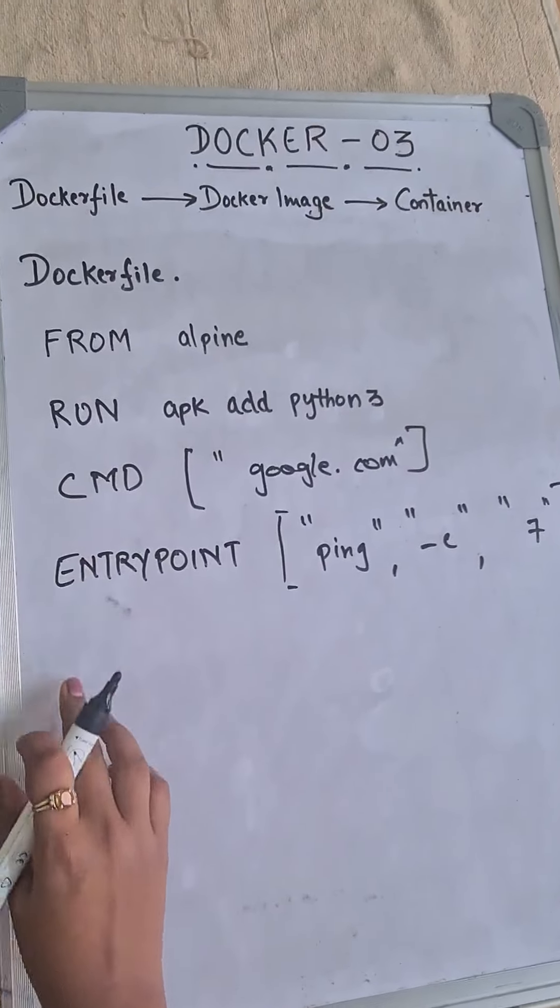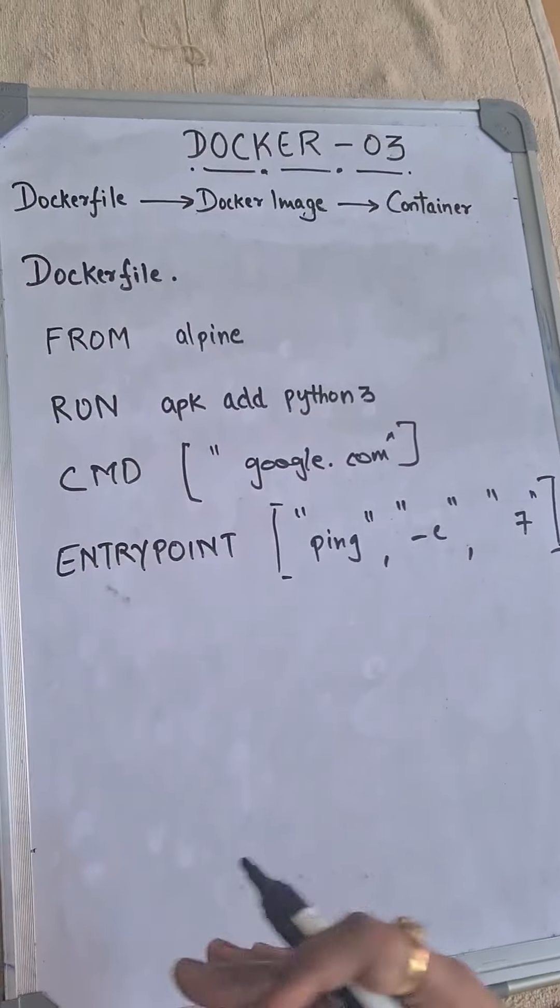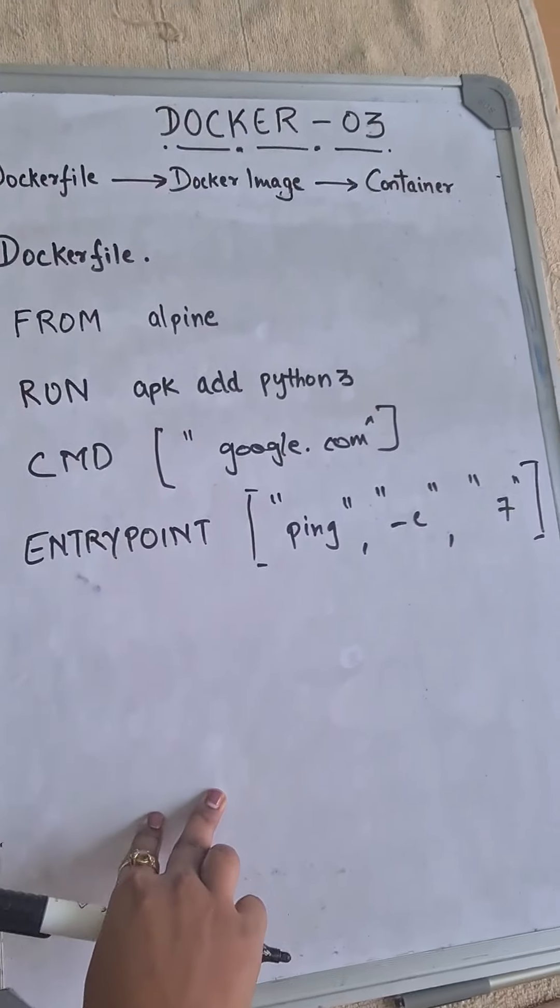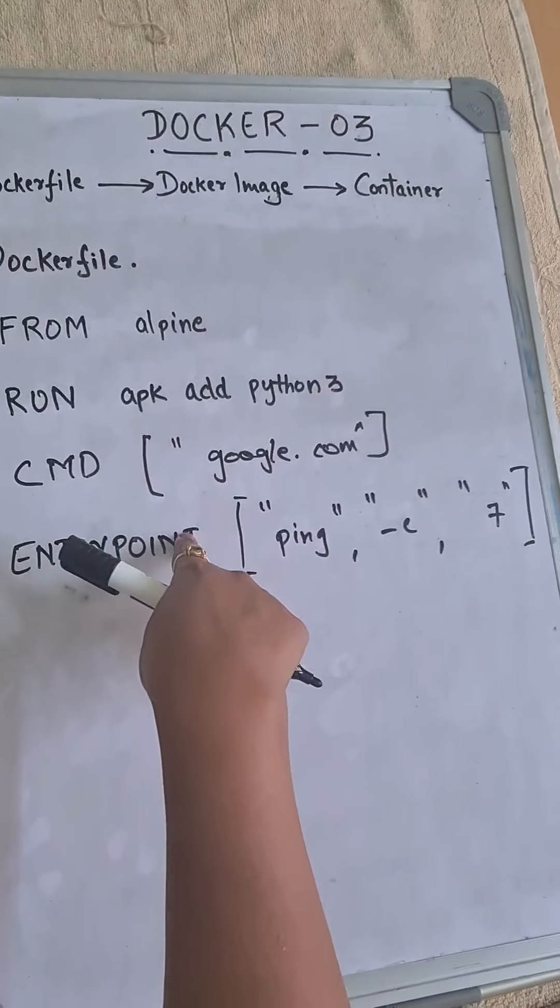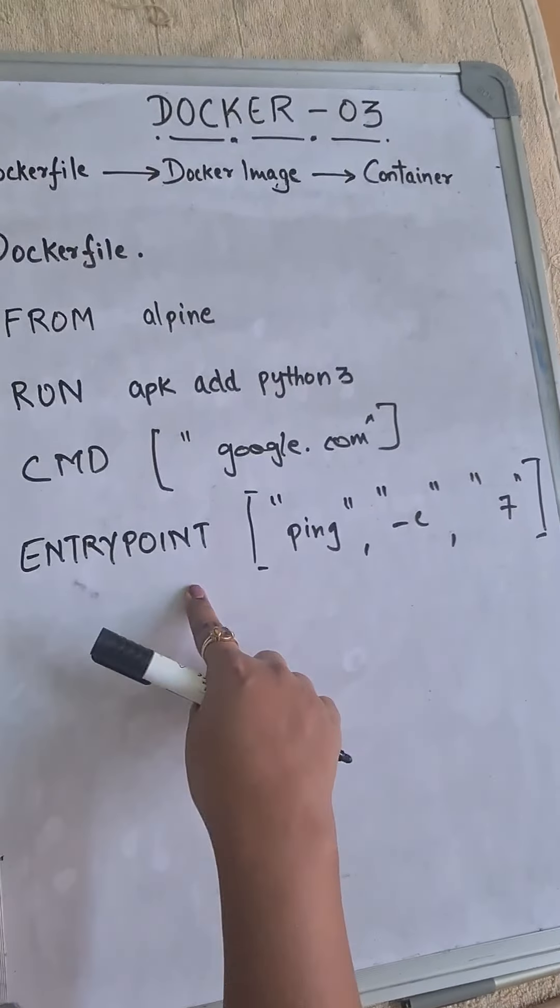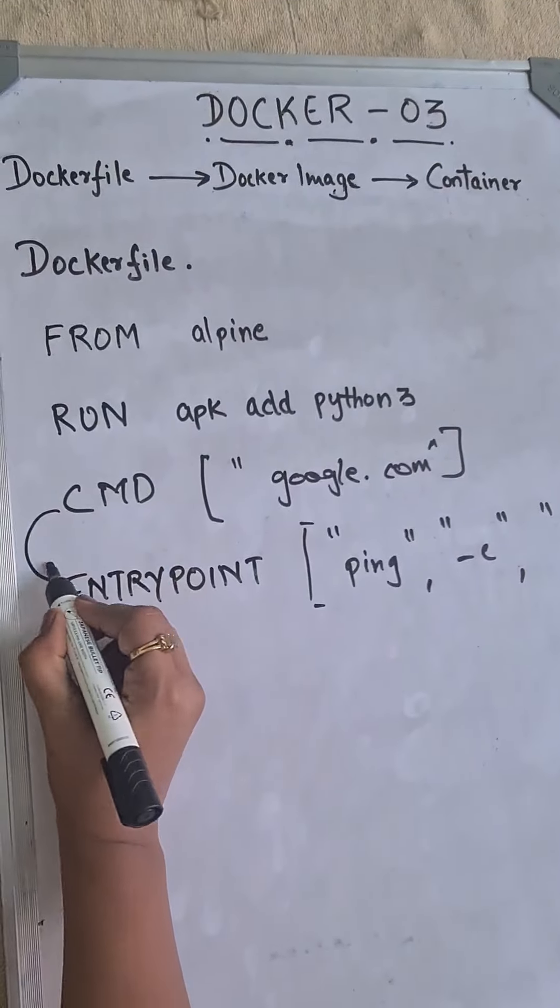Now we have CMD and ENTRYPOINT. So this is where we are going ahead and running our container, and the main process that is going to happen is it will ping google.com for seven times, and the argument that ENTRYPOINT is getting is from our CMD.